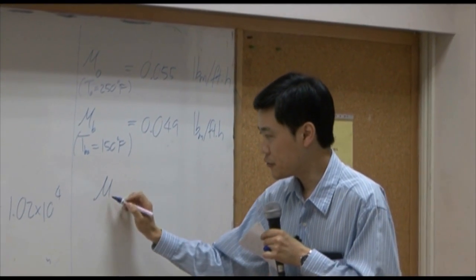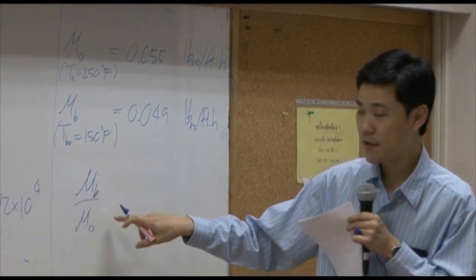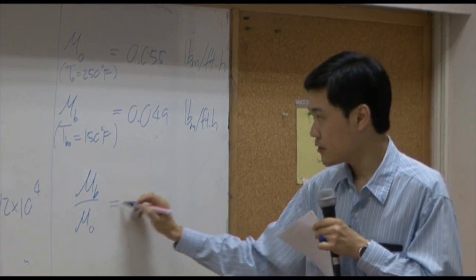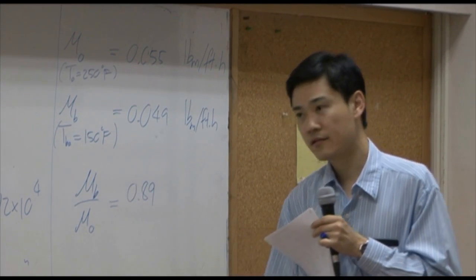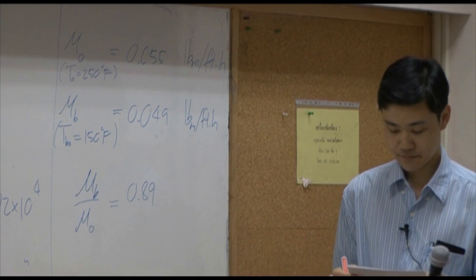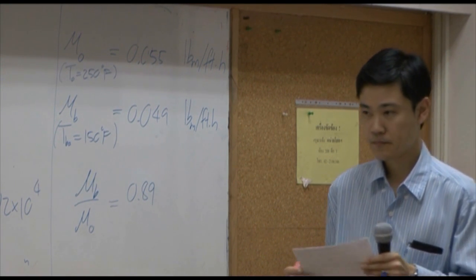Then, you get the ratio between viscosity at the bulk divided by viscosity at the surface of the pipe, to be this ratio of 0.89.